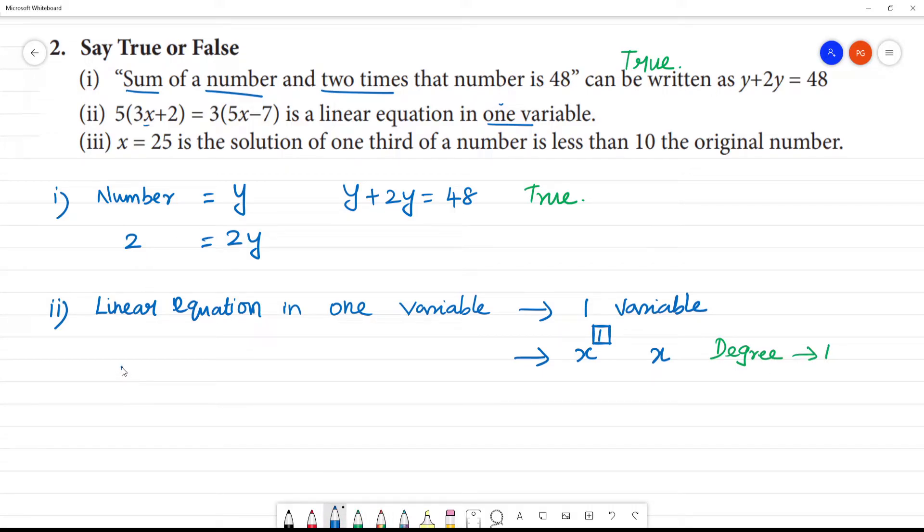Now let's look at this. We will simplify it. 5 into: 5 threes are how much? 15. 15x plus 5 into 2 is 10. That is equal to 5 threes are 15x minus 7 threes are 21. Now 15x minus 15x, they cancel out. That is equal to 0.